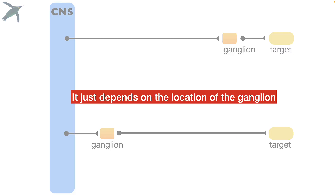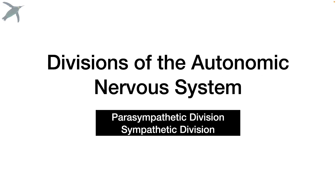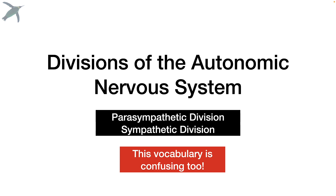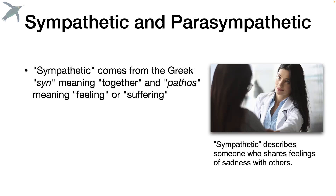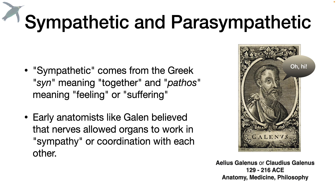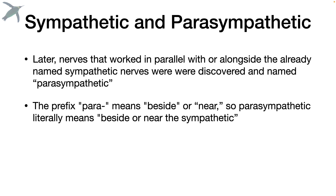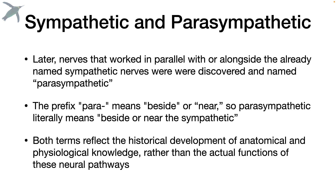Let's get into the divisions. We have the parasympathetic division and the sympathetic division. The vocabulary is confusing as well. Sympathetic comes from the Greek: sin meaning together, and pathos meaning feeling or suffering. Early anatomists like Galen believed that nerves allowed organs to work in sympathy or in coordination with each other. Later, more nerves were discovered that seemed to work in parallel alongside the already-named sympathetic nerves, so they were called parasympathetic — literally meaning beside or near the sympathetic nerves. These names reflect historical development rather than what they actually do.